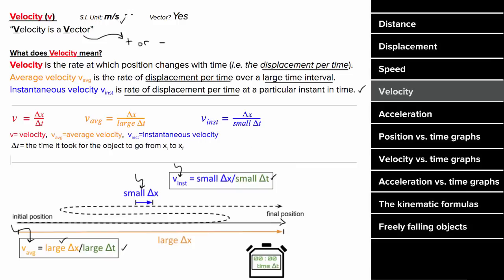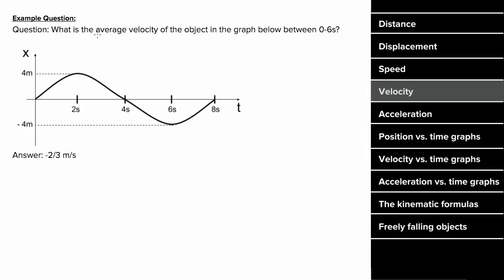The units of velocity are meters per second, and it is a vector — meaning it can be negative. If the velocity is directed leftward or downward, we typically consider it a negative value. For example, with this graph, to find the average velocity between zero and six seconds, since the object starts at zero meters and ends at negative four meters, the displacement is negative four, and the time was six seconds, giving an average velocity of negative two-thirds meters per second.